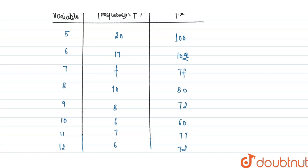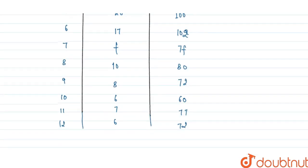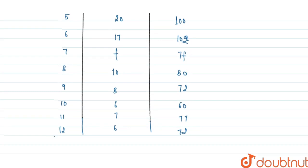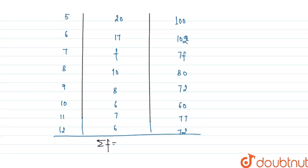Now we have to find the value of sigma f and sigma fx. Sigma f will be equal to 20 plus 17 plus f plus 10 plus 8 plus 6 plus 7 plus 6, which gives us 74 plus f. The value of sigma fx will be equal to 563 plus 7f.